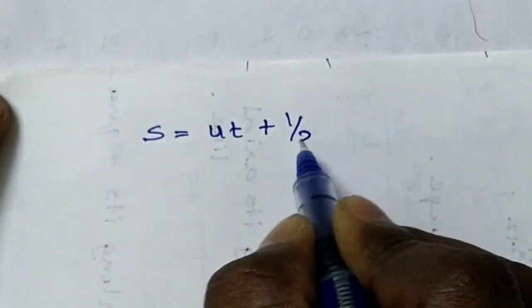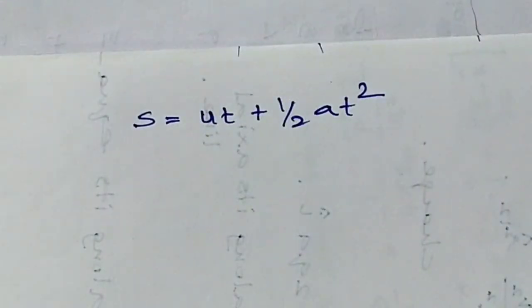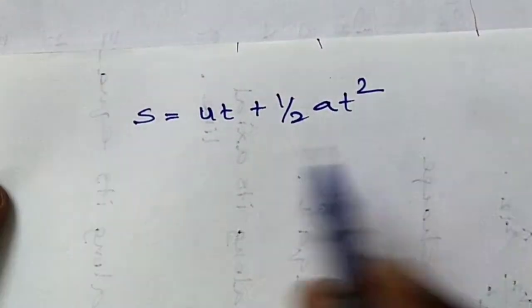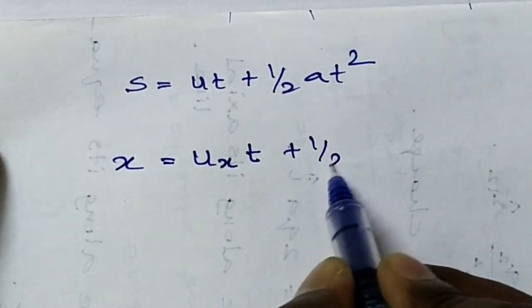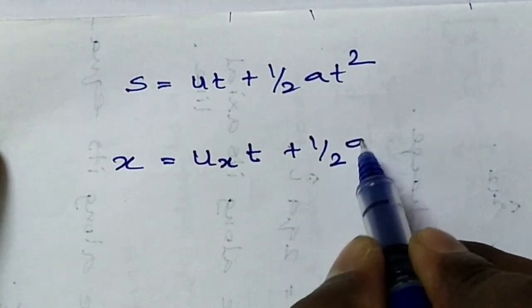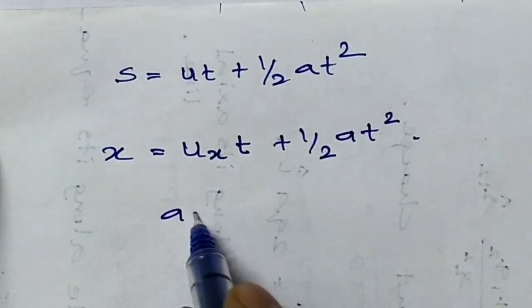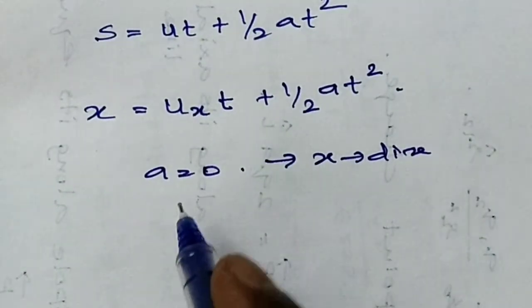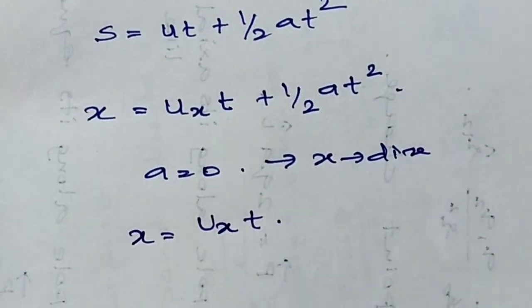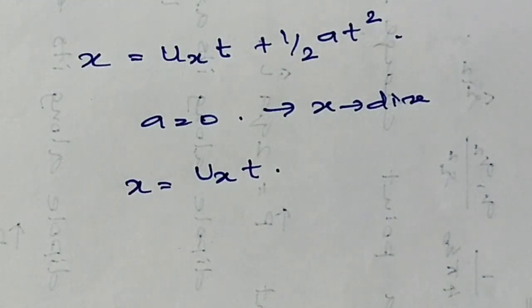The distance traveled by the projectile at time t is given by the equation S = ut + ½at². For the horizontal direction, the distance is x = Ux·t plus the acceleration term. Since the acceleration along the x-direction is zero, we finally get x = Ux·t for the horizontal motion.